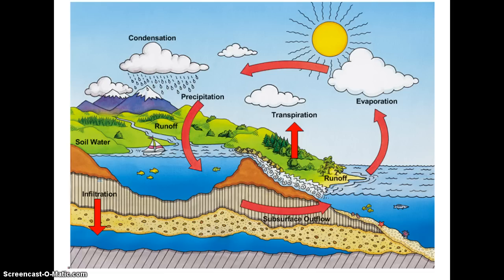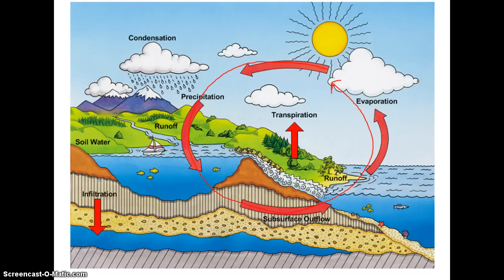These nutrients are constantly being returned from one form to another in any given ecosystem. We're going to start with the water cycle, which you've undoubtedly learned about in other science classes before, so I'm not going to spend too much time on it. The key idea is this ongoing cycling where water is constantly changing forms and returning to various forms over and over again in any given ecosystem.